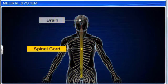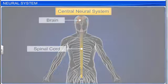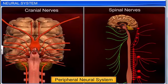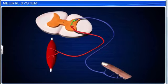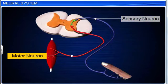The brain and the spinal cord form the central neural system. It is the site of information processing and control. The peripheral neural system comprises cranial and spinal nerves. It controls the voluntary functions of the body. The nerve fibers of peripheral nerves are of two types: afferent, or sensory nerve fibers, and efferent, or motor nerve fibers.